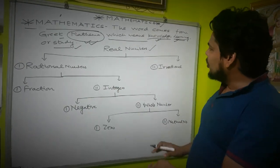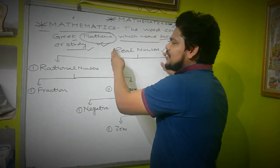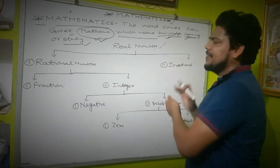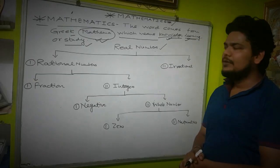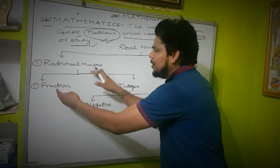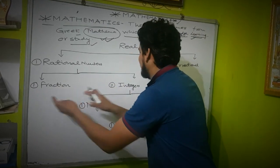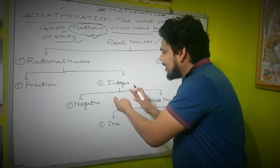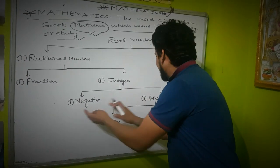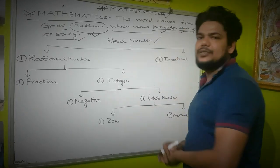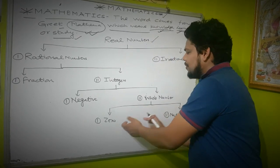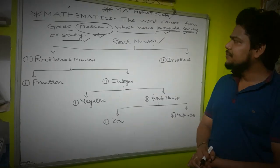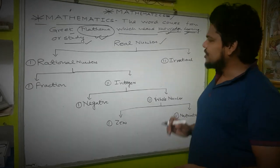Real numbers are of two parts: rational numbers and integers. Integers are also divided into negative numbers and whole numbers. Whole numbers are further divided into two parts: zero and the natural numbers.